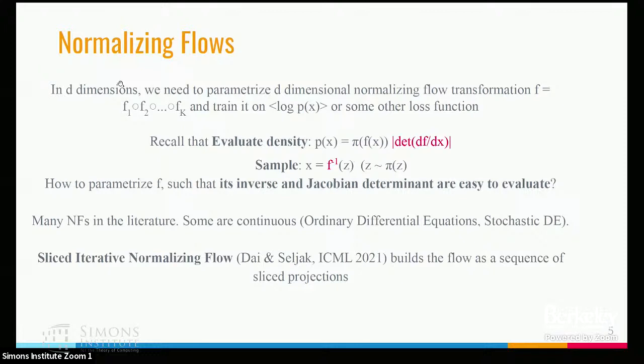The situation gets much more complicated in high dimensions. The most important aspect of normalizing flows is that we parameterize this as a flow where we can do both the inverse and the Jacobian easily, so that we can quickly evaluate them. There are many normalizing flows in the literature; some are continuous based on ODEs. The one I'll be talking about is the sliced normalizing flow, based on optimal transport — it has been accepted as a paper.